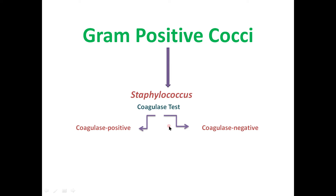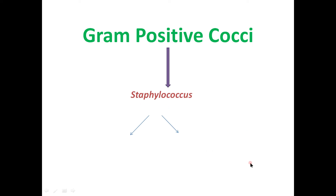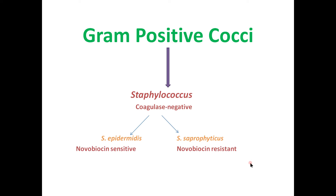On the basis of the coagulase test, the staphylococci are further classified as coagulase positive staphylococci and coagulase negative staphylococci. Staph aureus is the coagulase positive staphylococci, while staph epidermidis and staph saprophyticus are the coagulase negative staphylococci. To differentiate between the coagulase negative staphylococci, staph epidermidis is novobiocin sensitive and staph saprophyticus is novobiocin resistant.